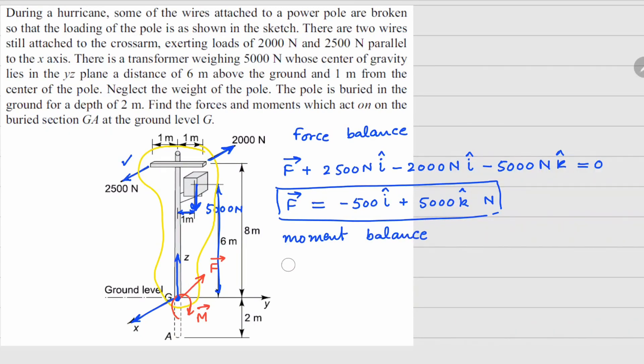For the movement, we will have the reaction M plus movement because of 2500 newton wire force plus movement because of 2000 newton force and movement because of transformer force. And all of this needs to be summed to zero.